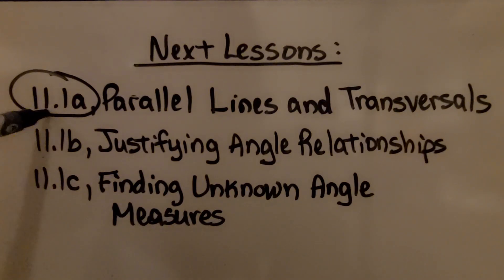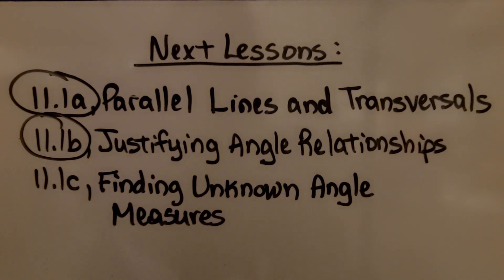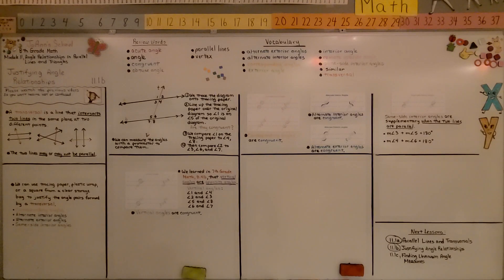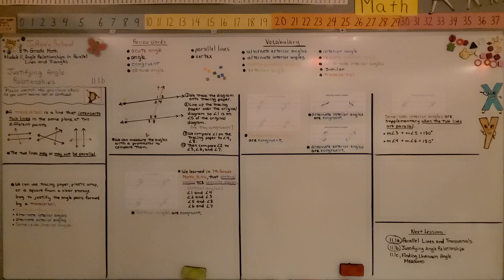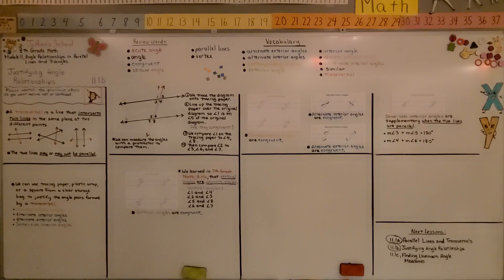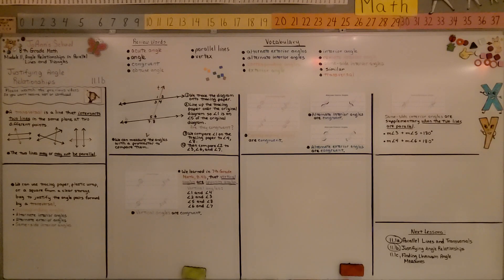We're now finished with the second part of the lesson. We're moving on to the last part: finding unknown angle measures. So now we know that vertical angles, corresponding angles, alternate interior and alternate exterior angles are congruent, and that's going to help us find all the angle measures of the eight angles with parallel lines and a transversal. Have a wonderful day and join me for the last part of the lesson.